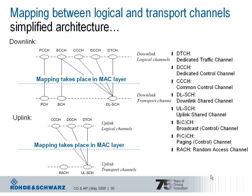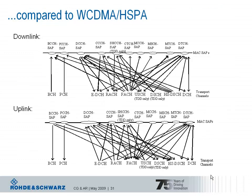On the uplink side, the common control channel, dedicated control channel, and dedicated traffic channel as logical channels are mapped onto the uplink shared channel, and there is also a random access channel defined as an uplink transport channel. These pictures also illustrate that the protocol architecture for LTE was significantly simplified, especially compared to wideband CDMA HSPA. In LTE there was a reduction in channels defined to simplify the handling and structure of the protocol architecture.